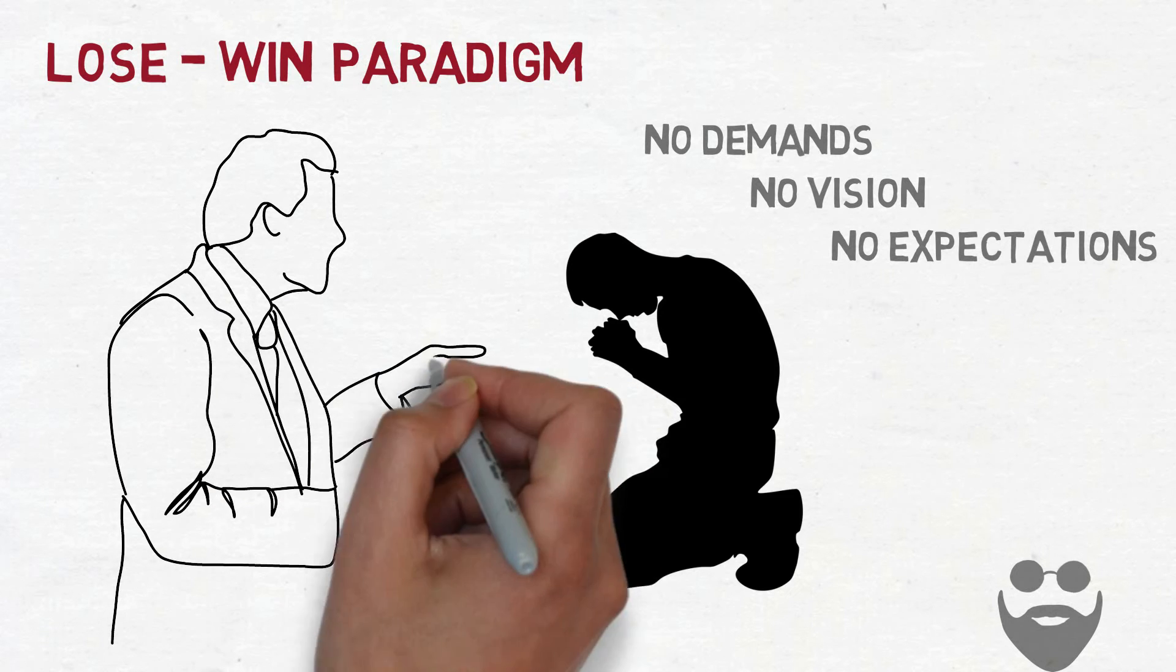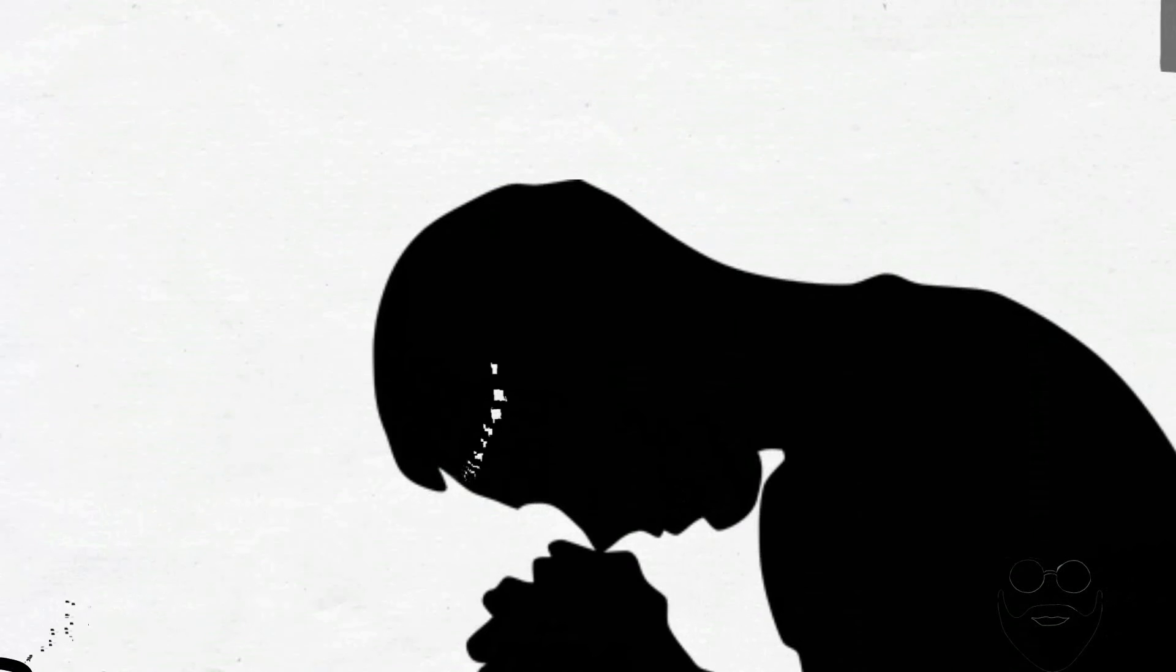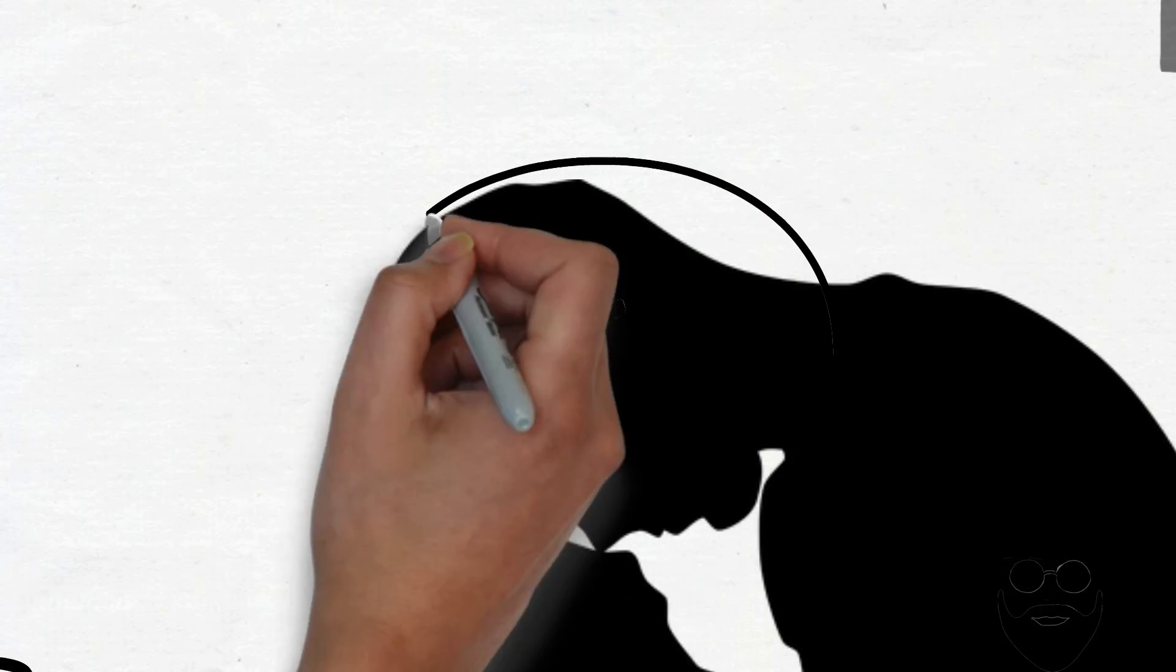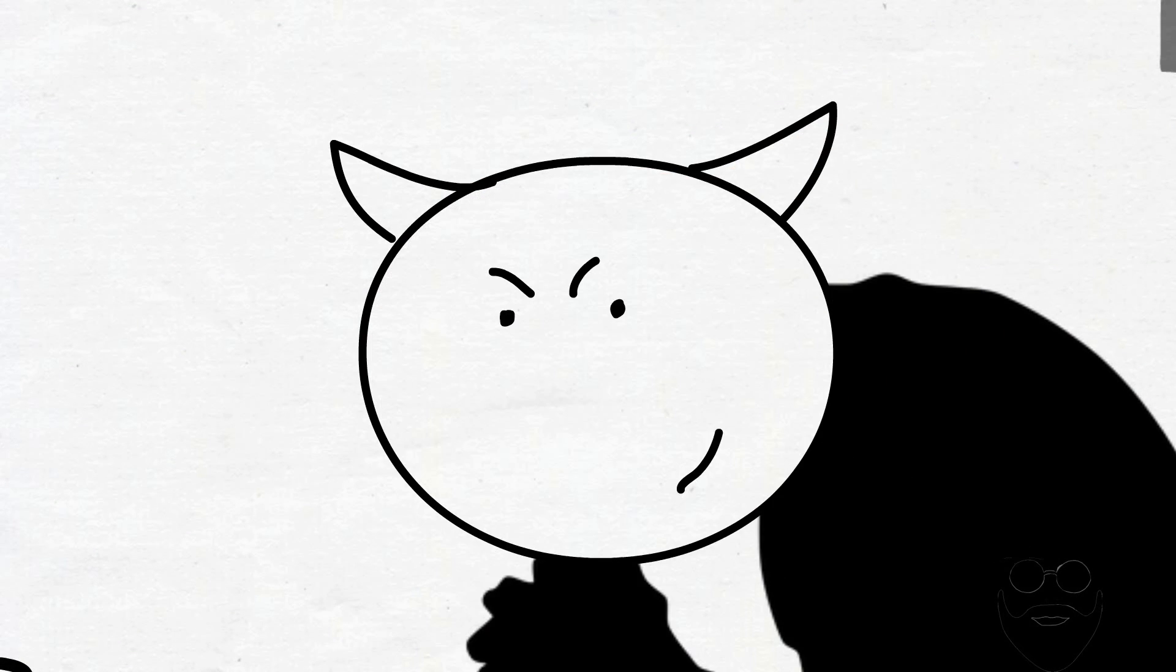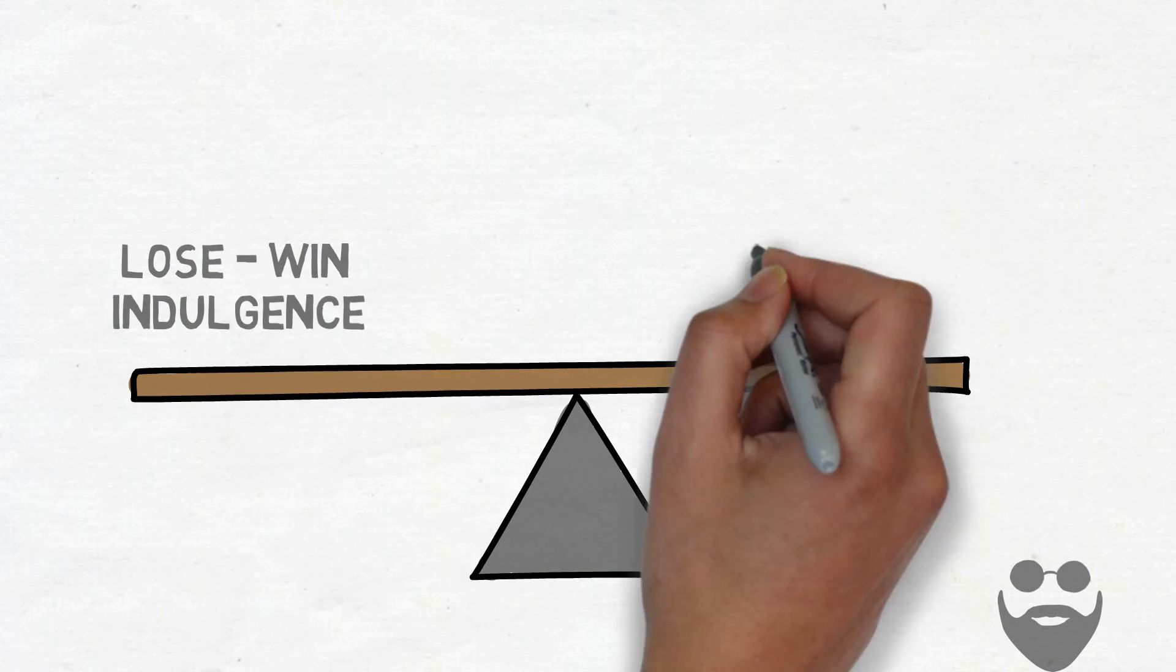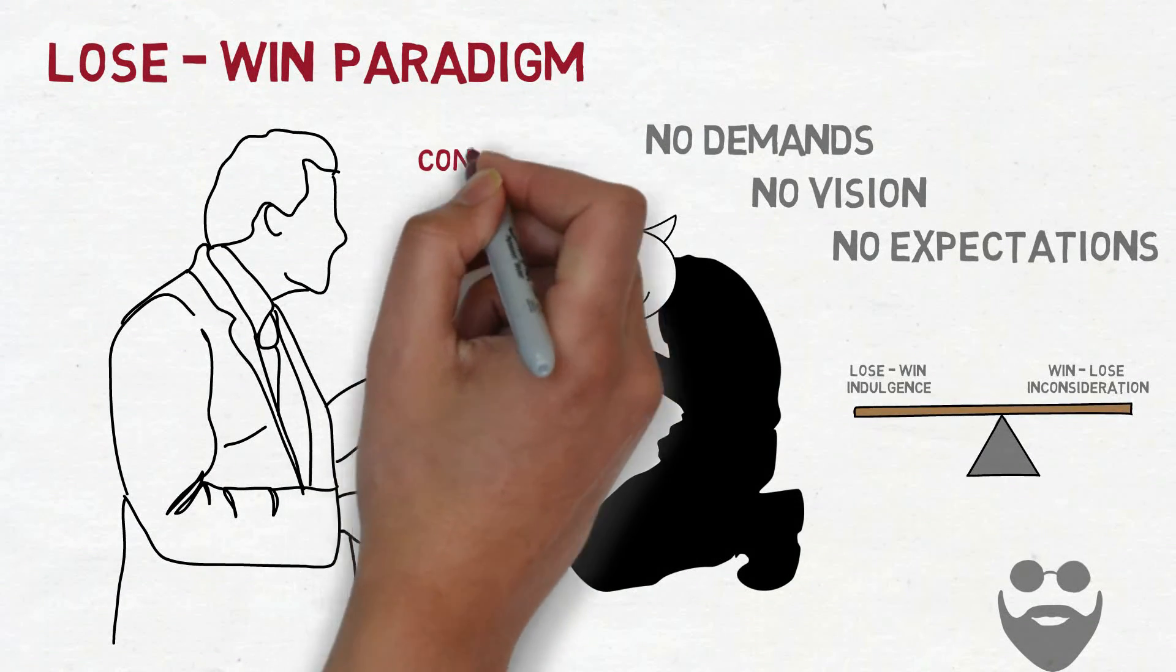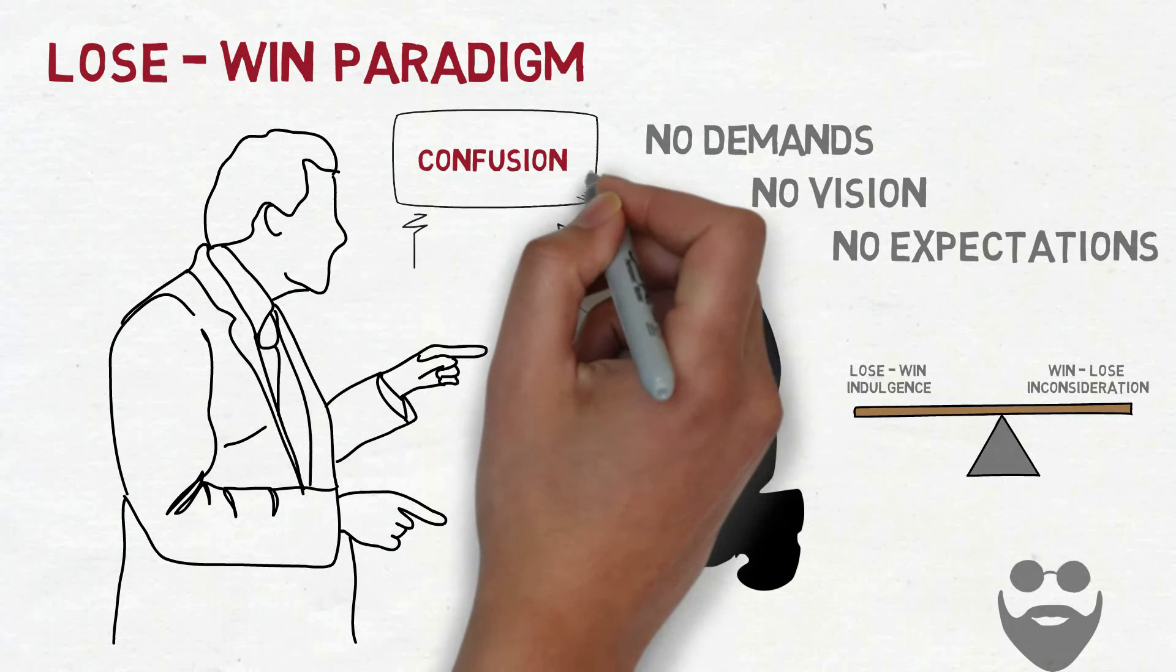Win-lose people love lose-win guys because they can feed on them. The grave problem with win-lose people is that they bury their feelings alive, which can later re-emerge in uglier ways. This does not always mean that a lose-win guy will always remain so. In fact, many people swing back and forth like a pendulum between lose-win indulgence and win-lose inconsideration. This causes great uncertainty and confusion around them.